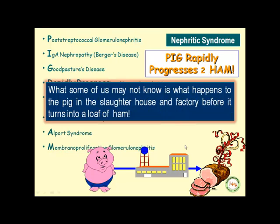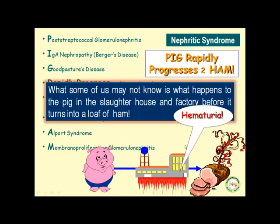What some of us may not know is what happens to that poor pig in the slaughterhouse before it turns into a loaf of ham. Substantial data supports the fact that the poor pig bleeds heavily inside the slaughterhouse, screams and begs for his life while turning into ham. That blood seen behind the hidden walls of the slaughterhouse can remind us of hematuria — the key finding in nephritic syndrome.